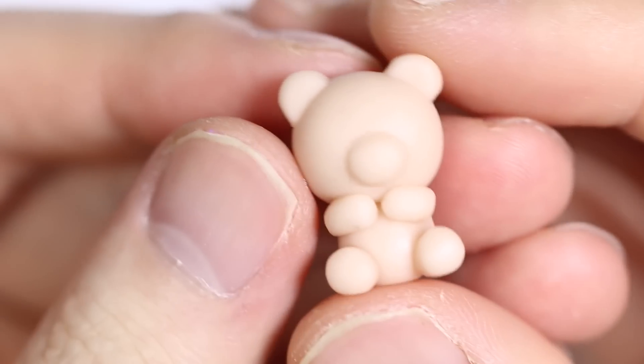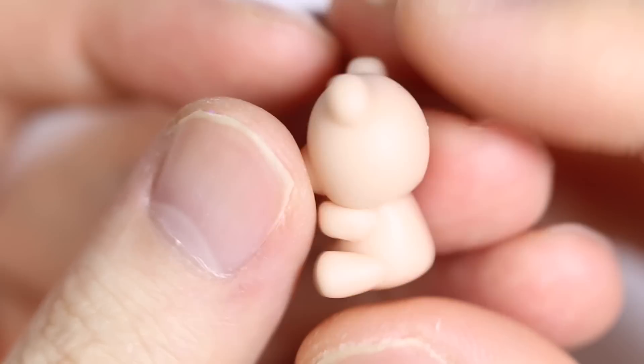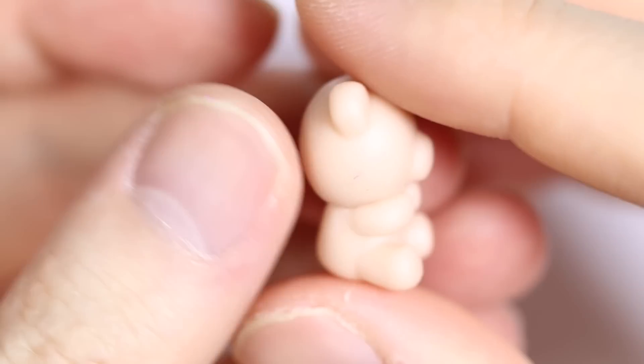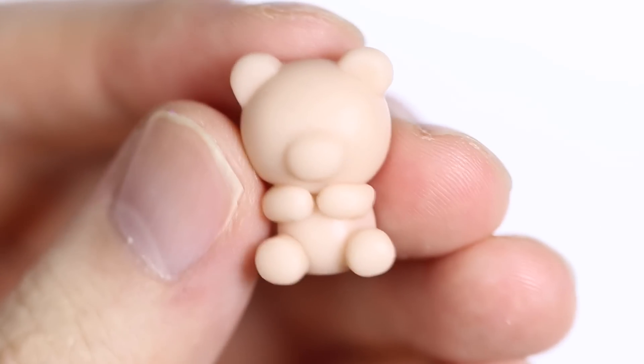And here you have your clay template of your bear and you can bake some little eyes and nose separately so you can glue that onto the resin piece once we're done.